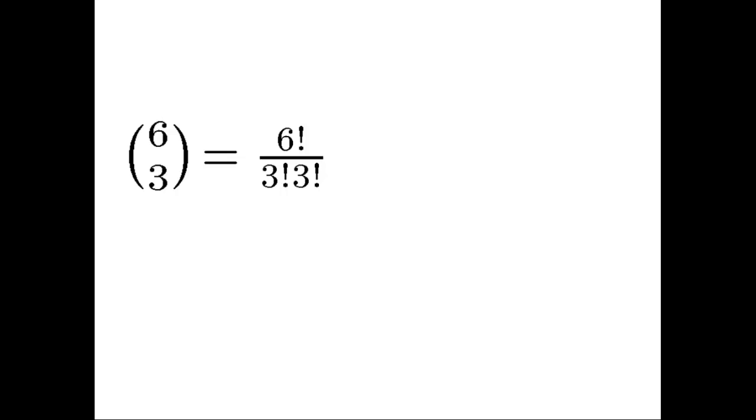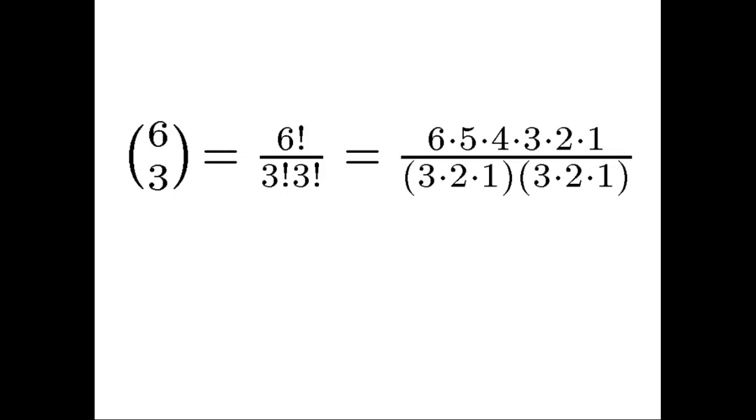This equals six times five times four times three times two times one, divided by three factorial, three factorial. If we cross out the three times two times one on both the numerator and the denominator, we have six times five times four on the top, and three times two times one on the bottom, which equals 20.